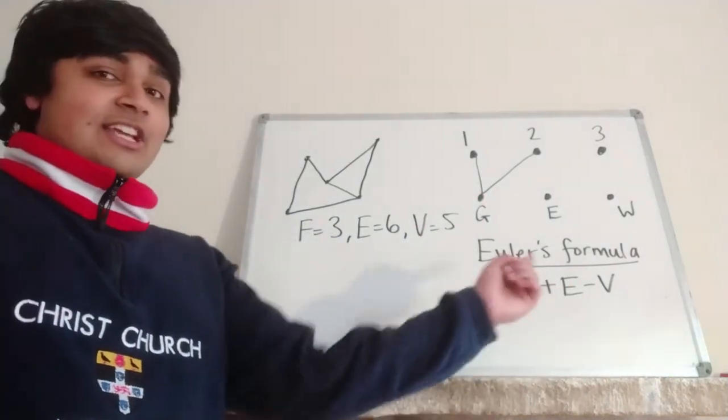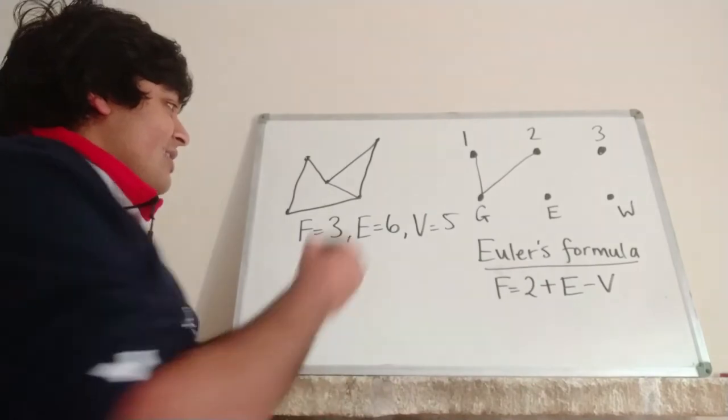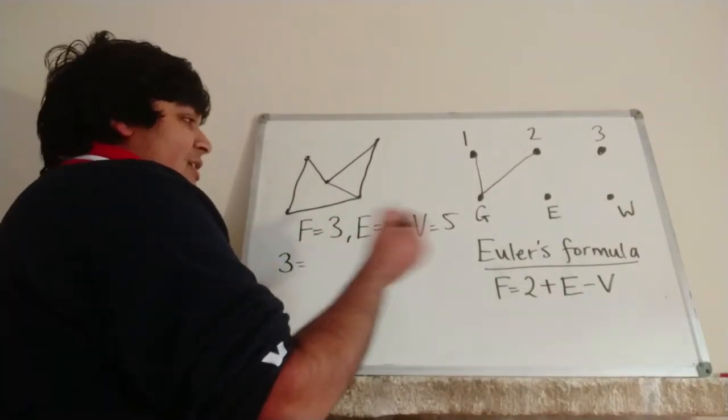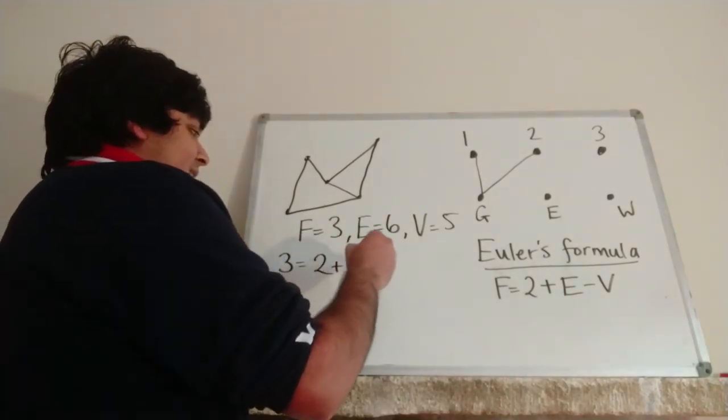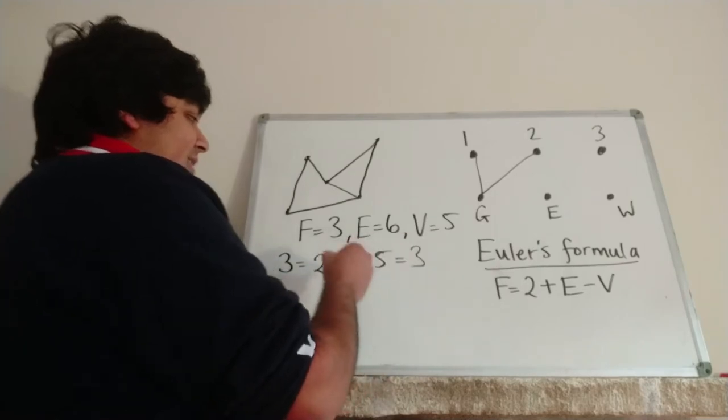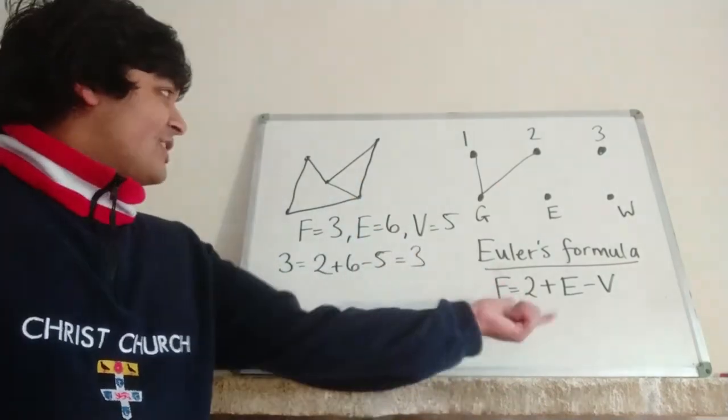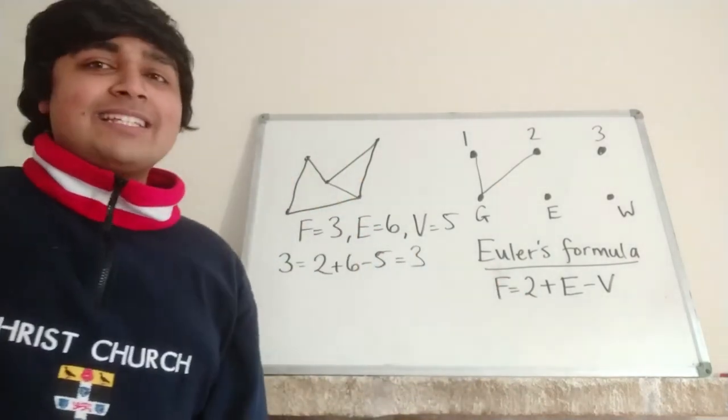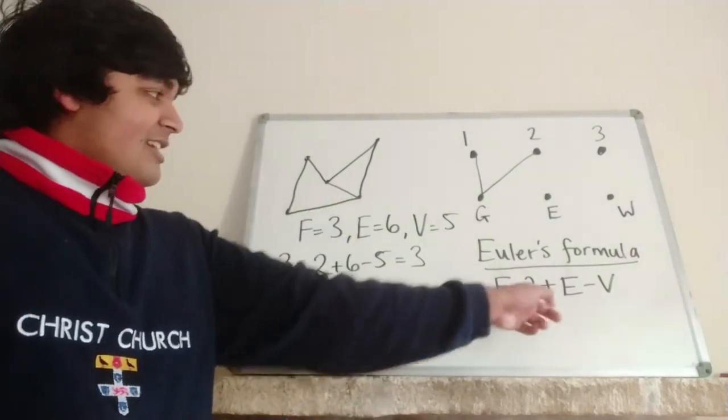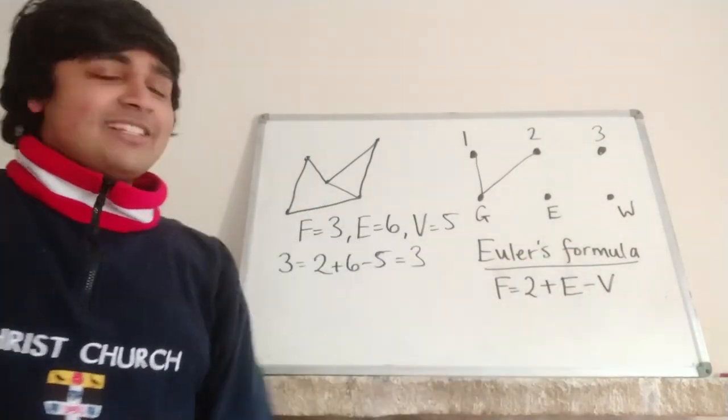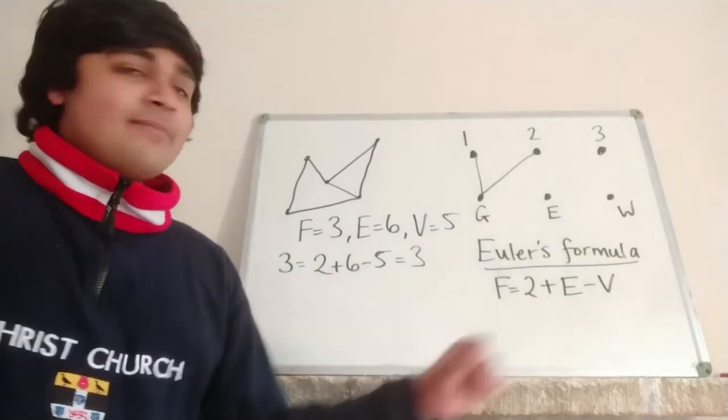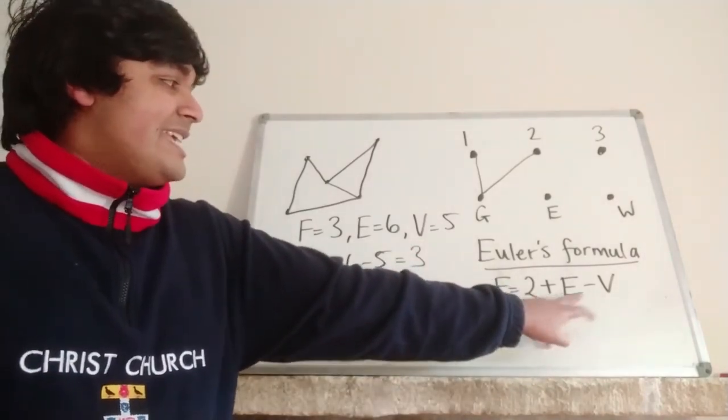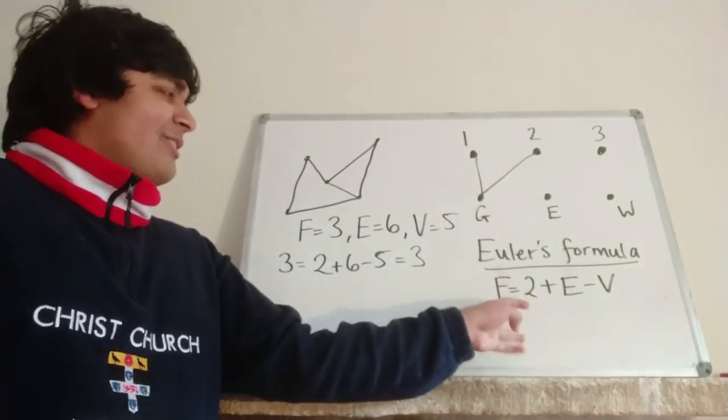So if we just compute this, just to check that the formula is true in this case, on the left hand side, we just have three. And on the right hand side, we have two plus six minus five, and of course that is indeed three. So Euler's formula checks out in this case. This is just to exemplify what each of the terms in this guy means and to show you an example where this works. This works in general, and as I say, you can prove this by induction on f.